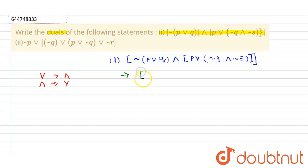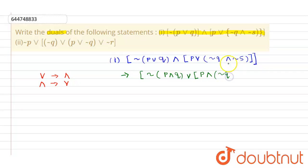The dual is: bracket negation of, in bracket p and q — this 'and' becomes 'or' — bracket, this 'or' becomes 'and', bracket negation of q — this 'and' becomes 'or' — negation of s. This is our final answer for statement one. Now let us consider statement two.